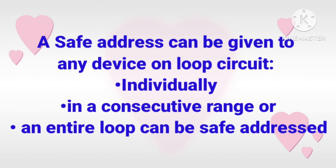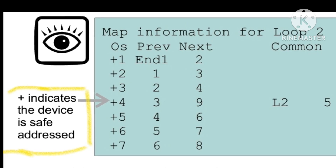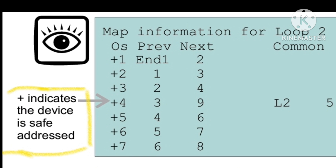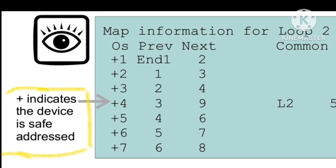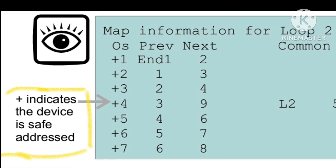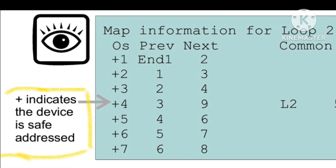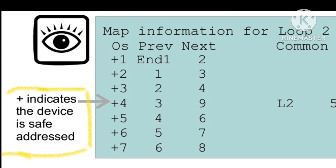By this way our labels will remain the same. A safe address can be given to a device on a loop circuit individually, in a consecutive range, or an entire loop can be safe addressed. So we can go from 1 to 207, or one by one — we can give any individual address, a range, or address the entire loop.